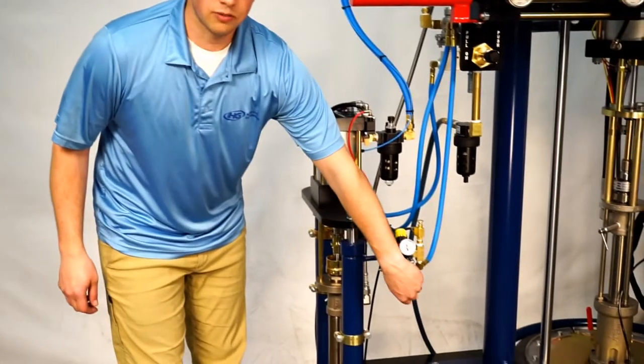This is how to change the follower o-ring for your 5 gallon HG adhesive dispensing system. First, you're going to want to lift your follower plate out of the bucket.